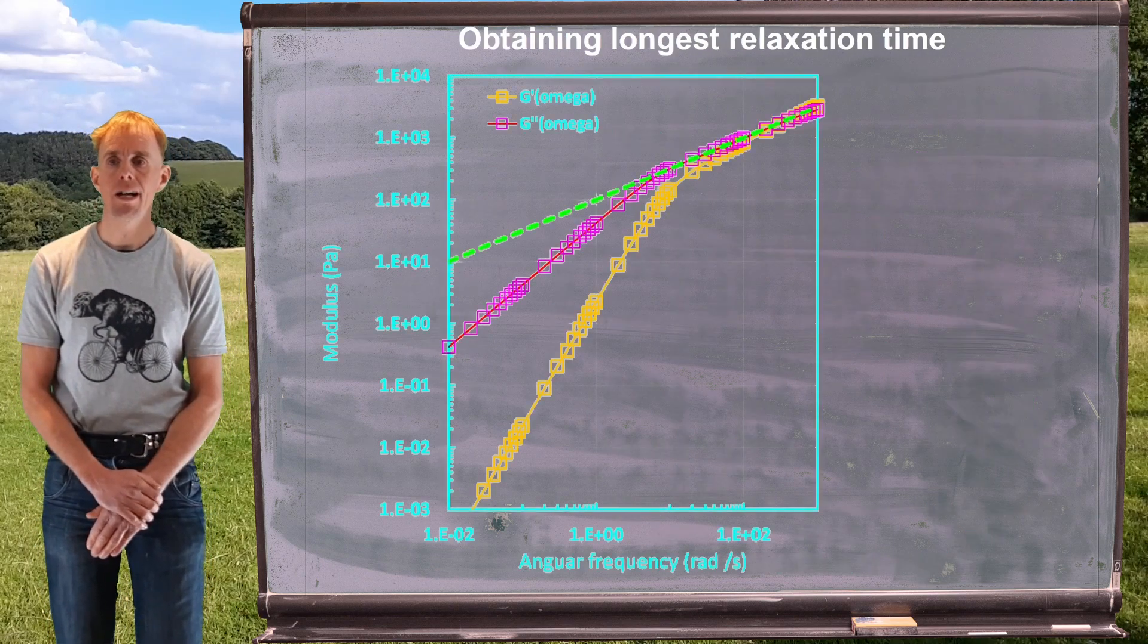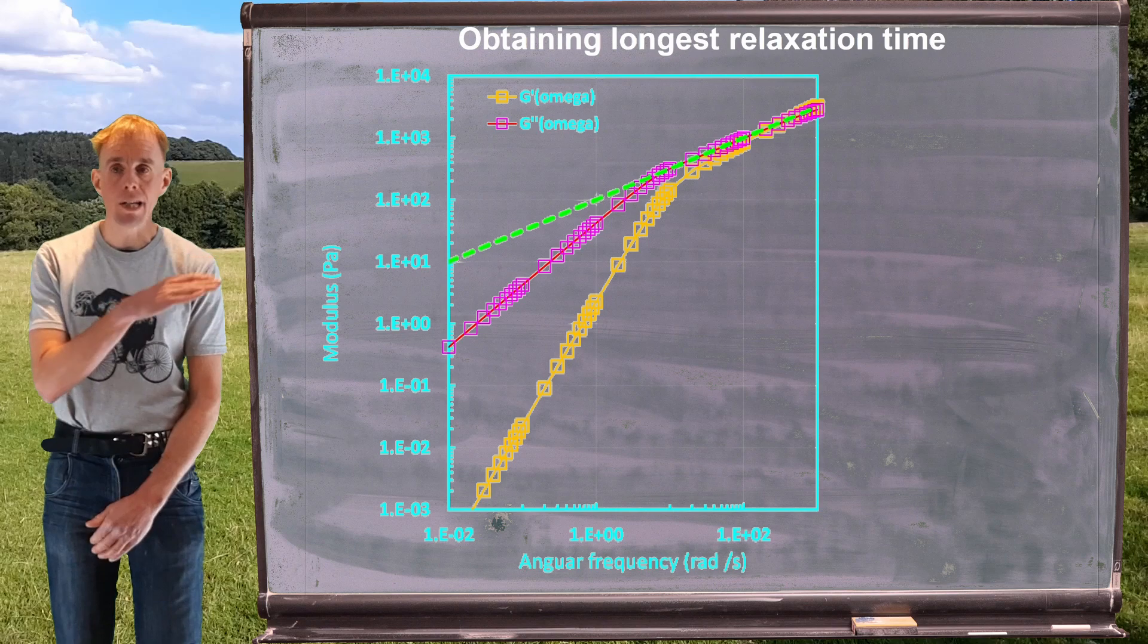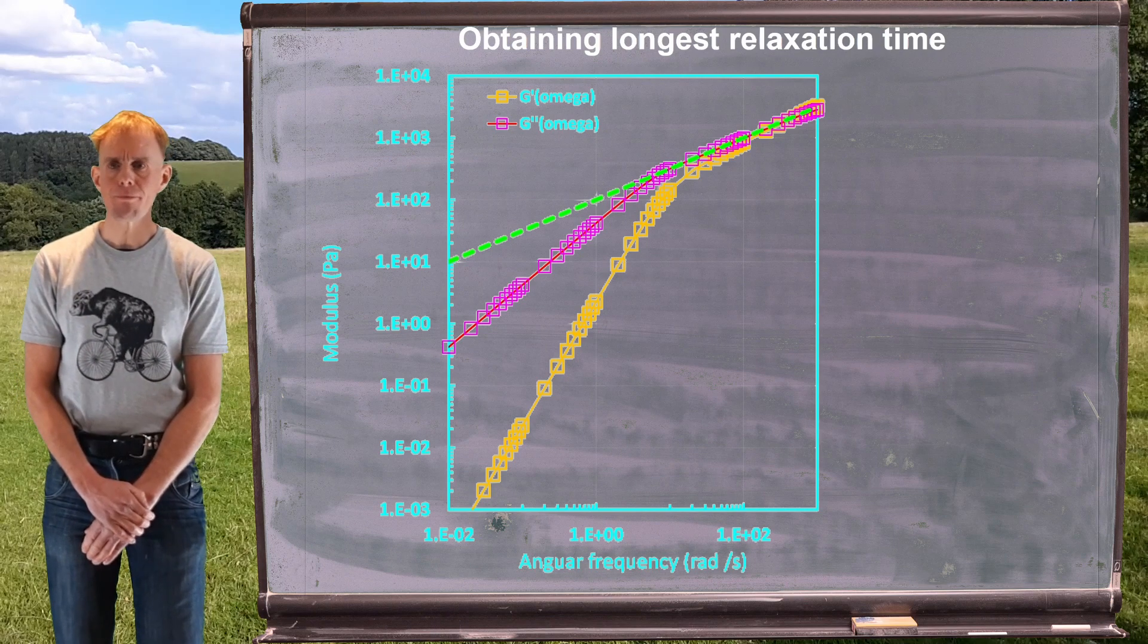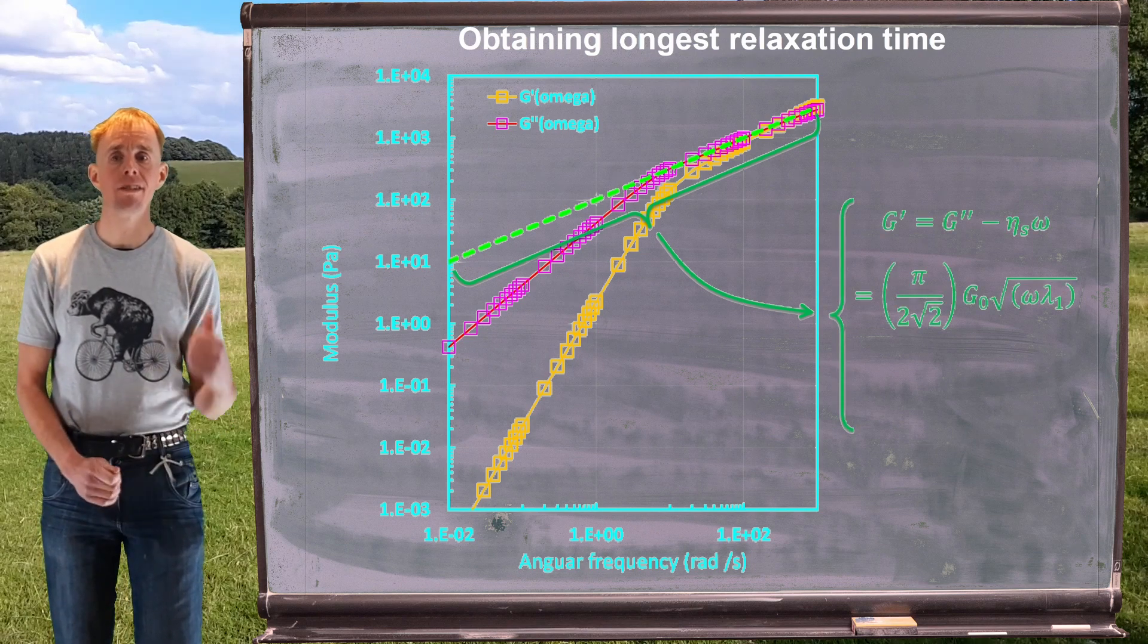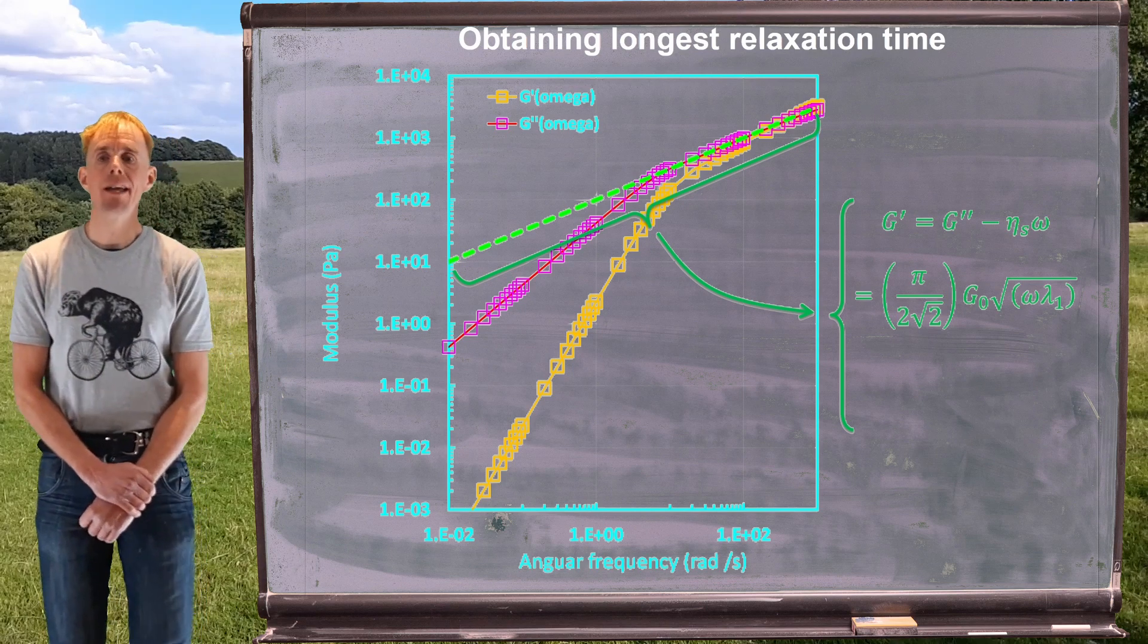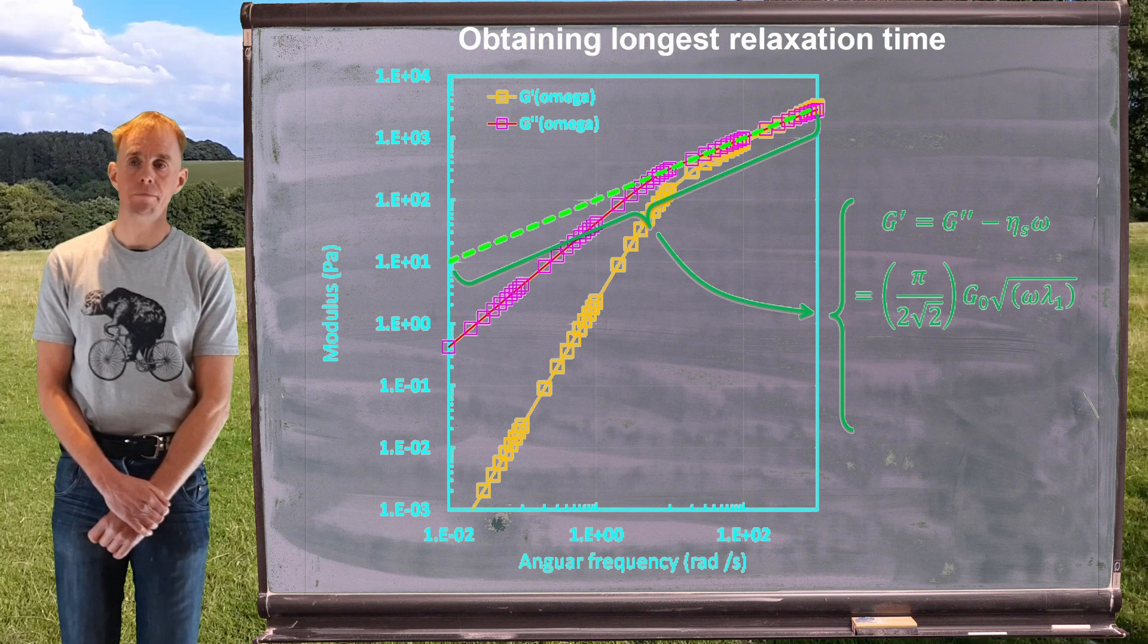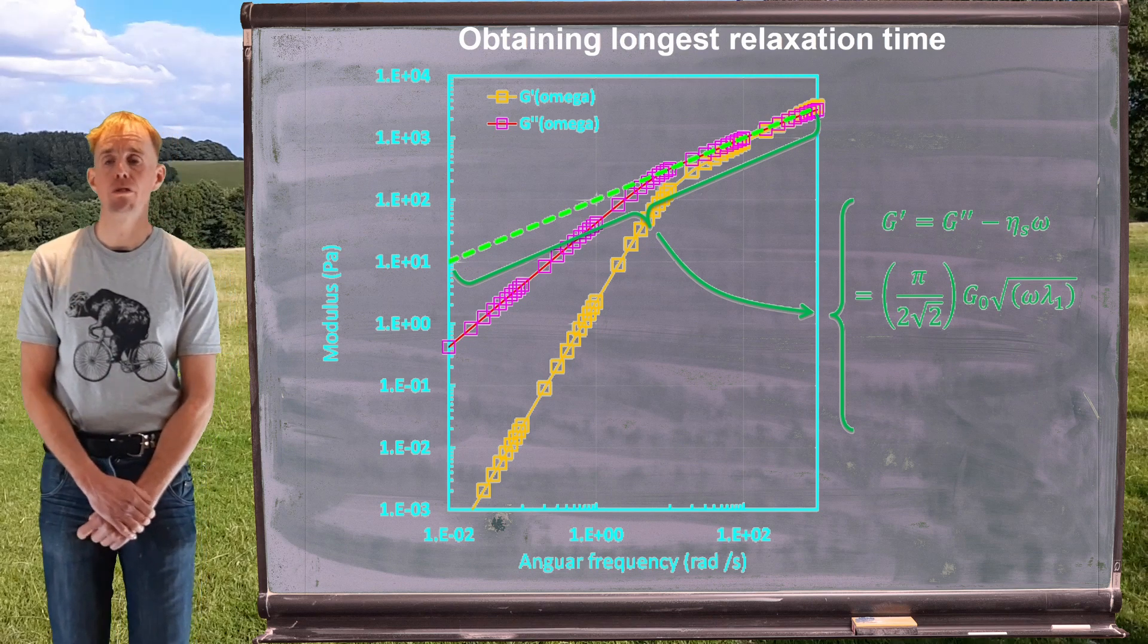Let's look at this in more detail. On the board I have put the plots of modulus back and I have now drawn a straight line in green through that region where both the viscous and elastic moduli have a gradient of a half. In this region I can effectively say that G' is equal to G'' minus the solvent viscosity contribution and those two are both equal to this expression here: π over 2√2, G₀√(ωλ₁). So we should be able to estimate λ₁ and G₀ from these data.